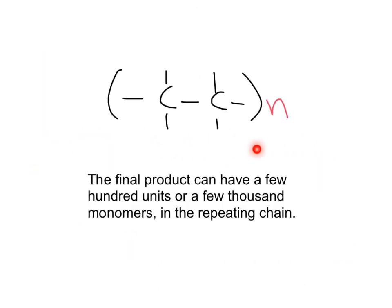By convention, the repeating unit is included in a parenthesis, and this N represents how many units are included in the polymer.